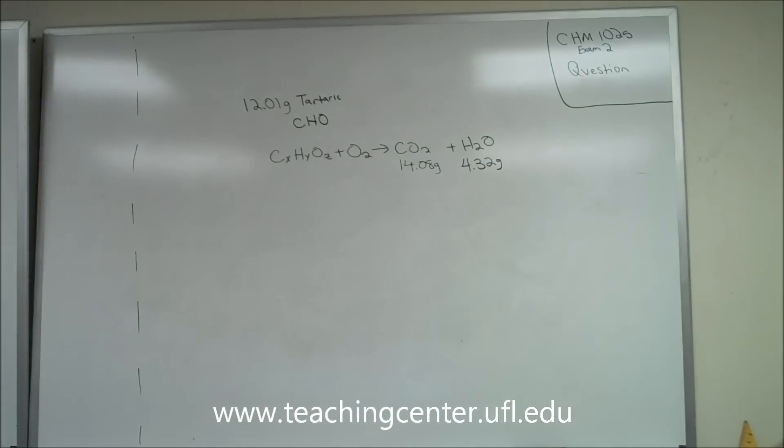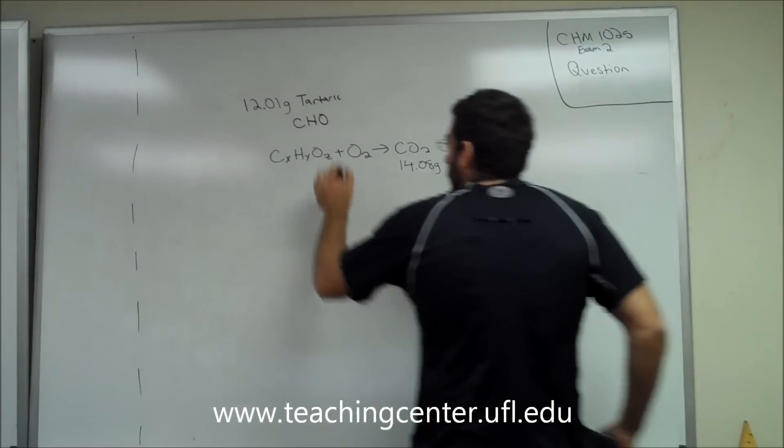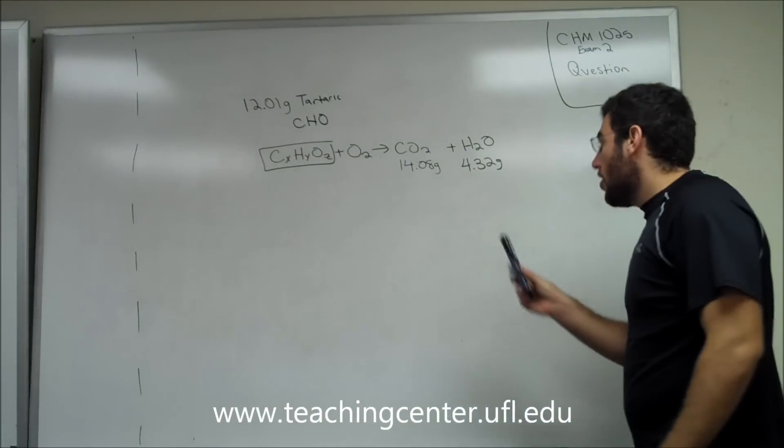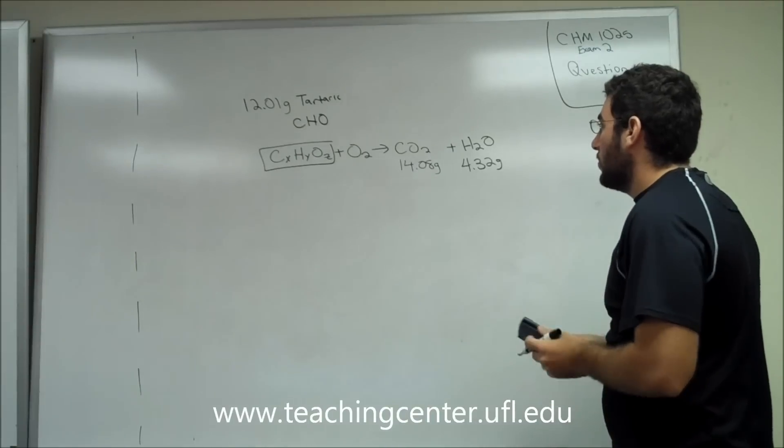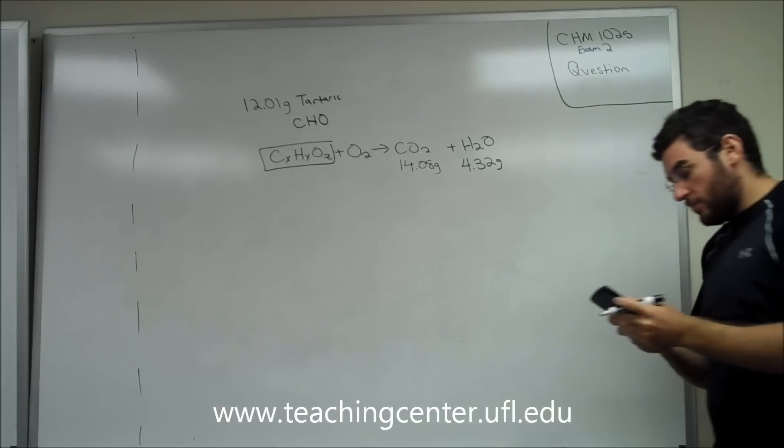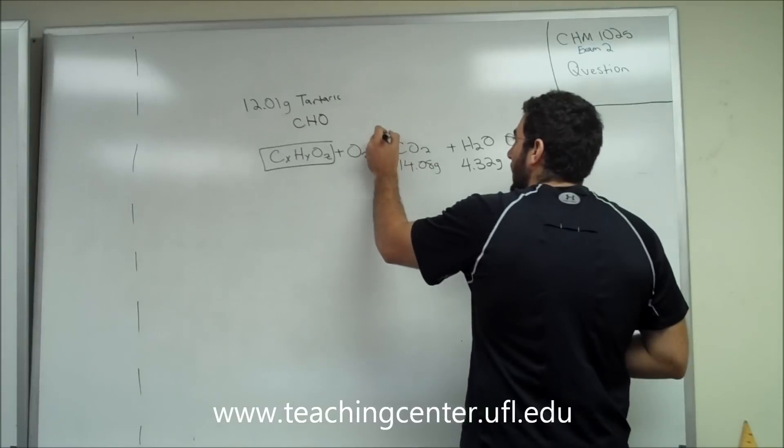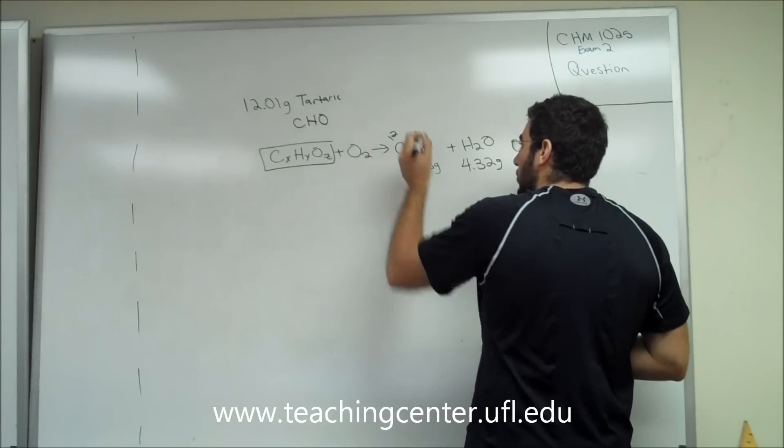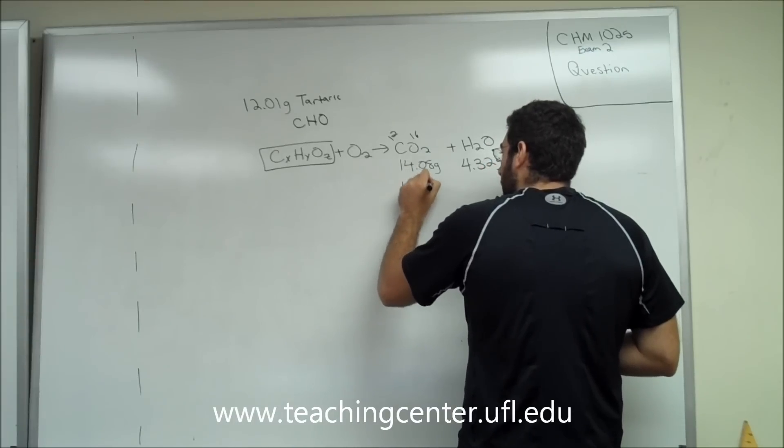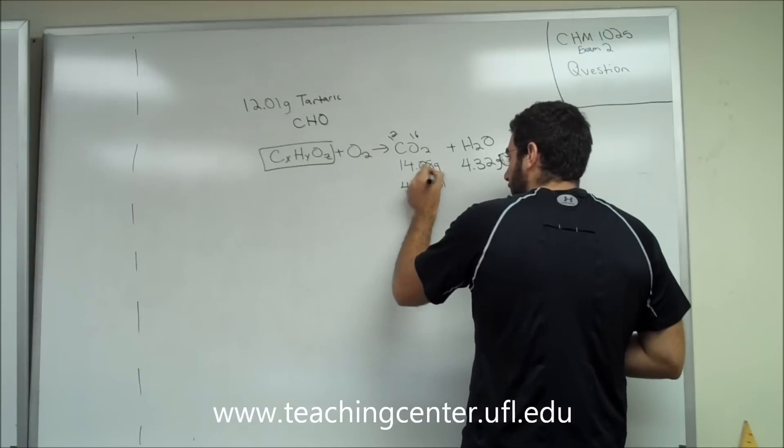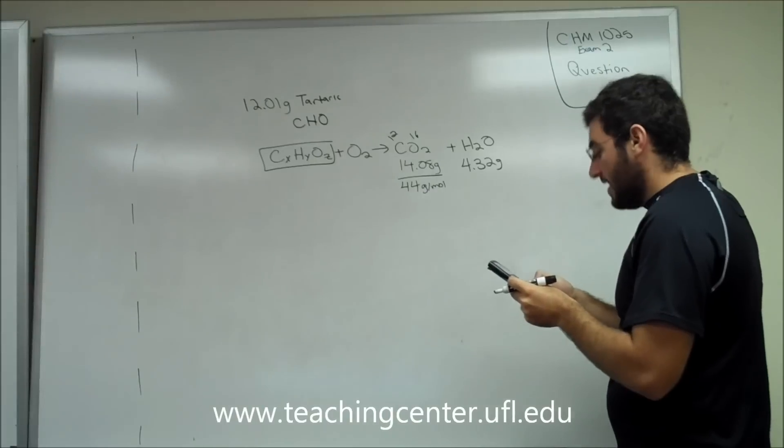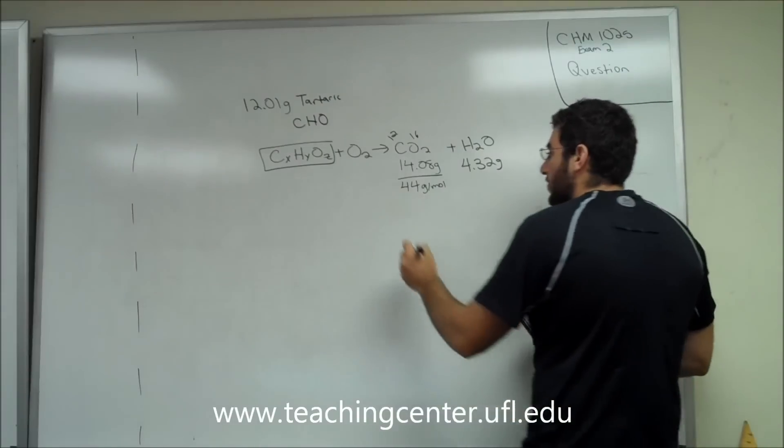So to solve this type of question, to solve what the formula for tartaric acid is, we have to find out the moles of carbon and the moles of hydrogen. In order to do this, it tells us we have 14.08 grams. We know that carbon has a molar mass of 12 and oxygen has a molar mass of 16, so together it has a molar mass of about 44 grams per mole. So to find out how many moles it is, we do 14.08 divided by 44, which is 0.32 moles.